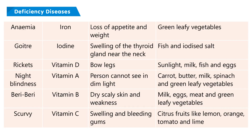Night blindness: deficient nutrient — Vitamin A; symptom — person cannot see in dim light; sources — carrot, butter, milk, spinach, and green leafy vegetables. Beriberi: deficient nutrient — Vitamin B; symptoms — dry scaly skin and weakness; sources — milk, eggs, meat, and green leafy vegetables. Scurvy: deficient nutrient — Vitamin C; symptoms — swelling and bleeding gums; sources — citrus fruits like lemon, orange, tomato, and lime.